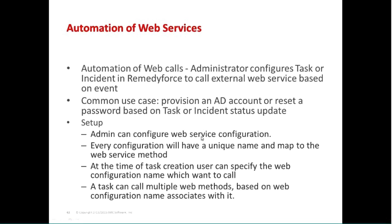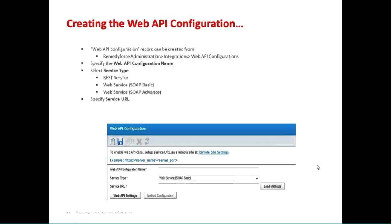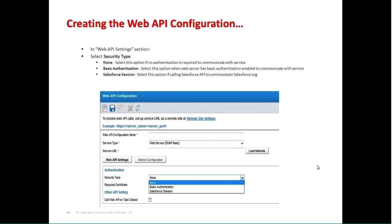The admin configures it, and you can have multiple web methods. If some things need to be REST and others need to be SOAP, both can be tied to an incident or a transform. The administrator has the ability to go out and do that. When you do it, you'll see we support three types: REST, SOAP Basic, and SOAP Advanced. Like most things in RemedyForce, you go through a simple wizard — you just identify the service type and the URL it's going to be associated with.